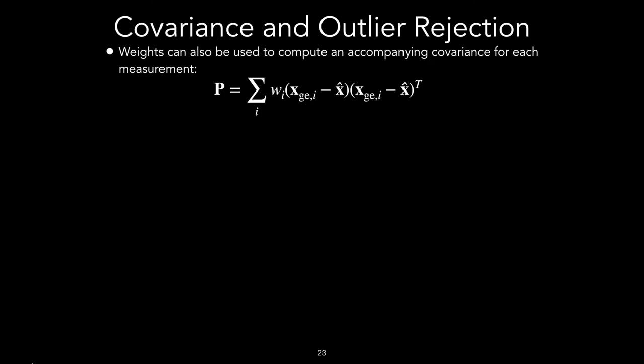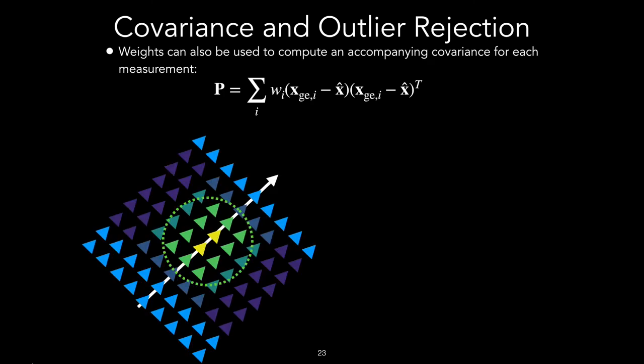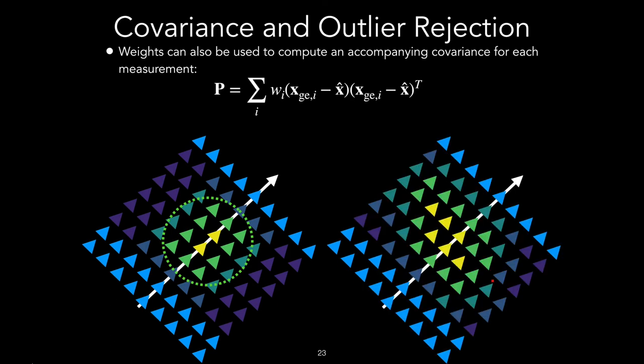In the previous computation, we not only get the localization, but we get a weight for each of the reference images, which gives us a sense of how spread out our measurement is. We can use these weights to compute a covariance estimate as shown here. This method results in smaller covariance for weight distributions that are highly peaked in a single area. We are less confident when we have high weights spread out over a larger area and that kind of distribution yields a larger covariance using this method. We can then use the covariance to reject measurements where the sigma value is over a given threshold and I'll show some more examples of this in the results section.